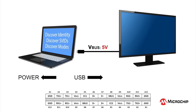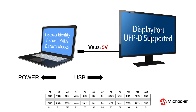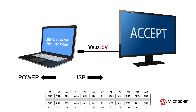With the notebook as the bus master, it can issue what we call discovery messages in order to determine what alternate modes may be available for this connection. The monitor replies with its DisplayPort capabilities, and the notebook then configures the monitor and commands it to enter the DisplayPort alternate mode. In this way, the USB-C connection has been reconfigured to carry both DisplayPort native data in tandem with the USB data.